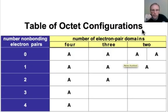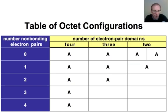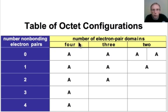Let's come up with all the ways that we could arrange an octet of electrons around an atom. We'll use this table of octet configurations to help us organize the process. We'll categorize things based on the number of non-bonding electron pairs from 0 to 4, and the number of electron pair domains.